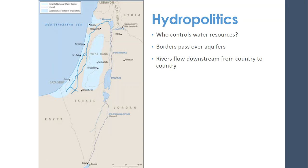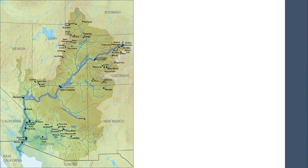Rivers flow downstream from one country to another country. If you dam a river upstream, you are preventing people downstream from accessing that water. We have a treaty with Mexico because the Colorado River flows into Mexico — it ends in Mexico, and it doesn't actually make it all the way to the sea anymore most of the time. But we have a treaty that says we have to have a certain amount of water flowing to Mexico because it's also their river. The treaty doesn't say anything about the quality of water getting to Mexico, but we have to have some water getting there.